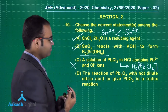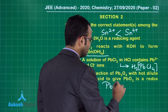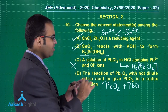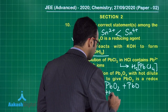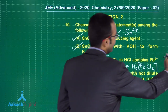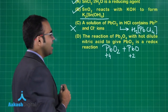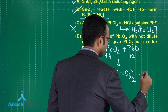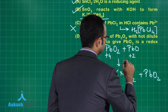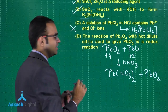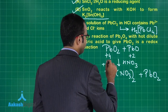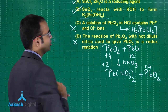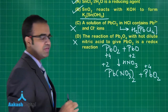Let us look at option D: Pb₃O₄ with HNO₃. What are the oxidation numbers of lead in both compounds? The oxidation numbers are +4 and +2. If I treat this with HNO₃, I get PbCl₂ plus PbO₂. The oxidation state remains the same — this is +2 and this is +4. No change in oxidation state, so option D is the wrong statement. We have only two correct options: A and B.